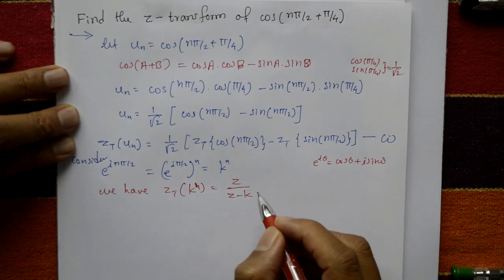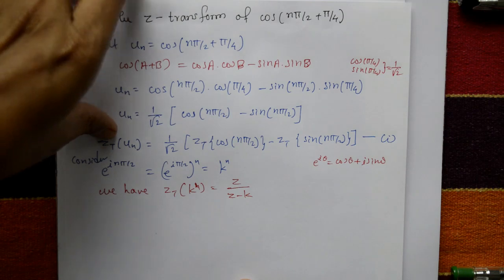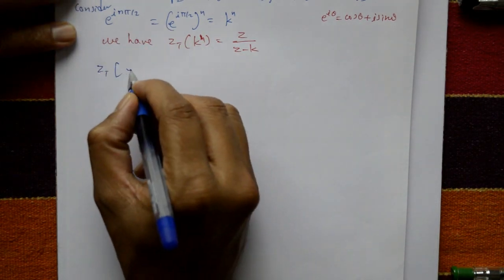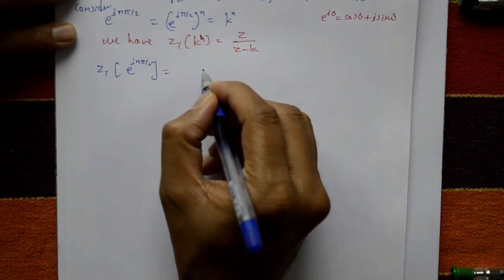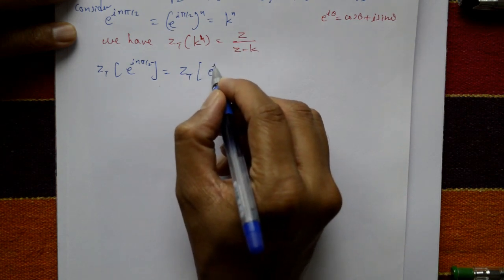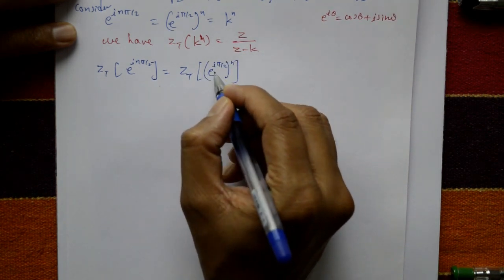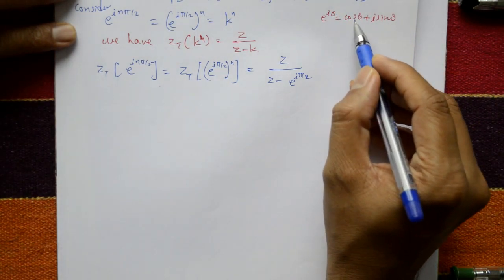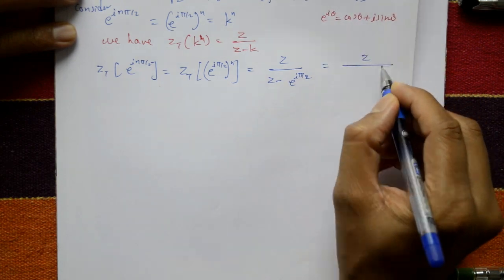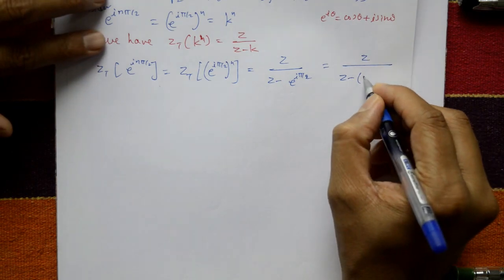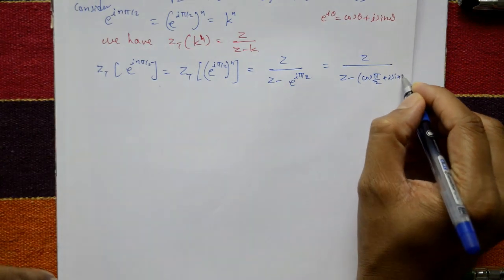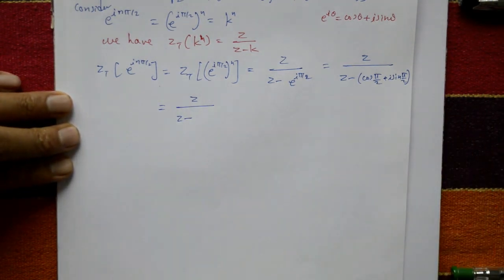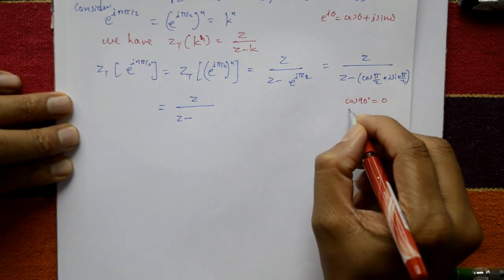We know Z{k^n} = Z/(Z − k). So Z{e^(inπ/2)} = Z/(Z − e^(iπ/2)). Substituting e^(iπ/2) = cos(π/2) + i sin(π/2), the denominator becomes Z − (cos 90° + i sin 90°).